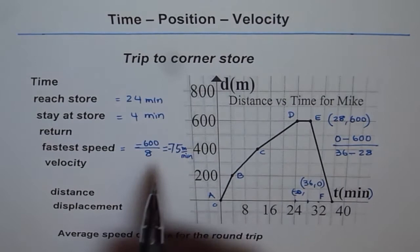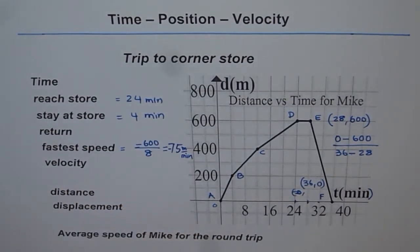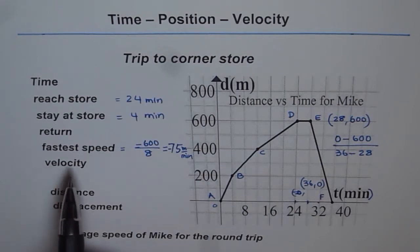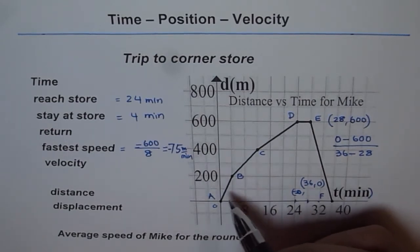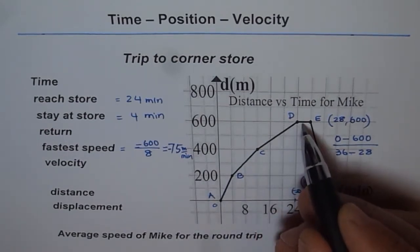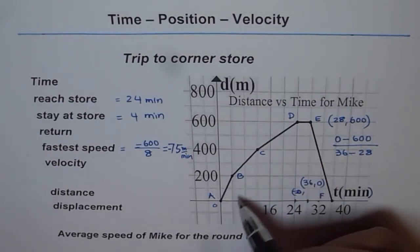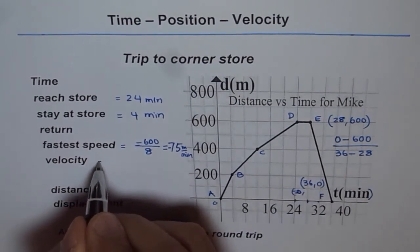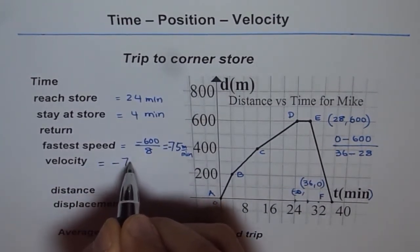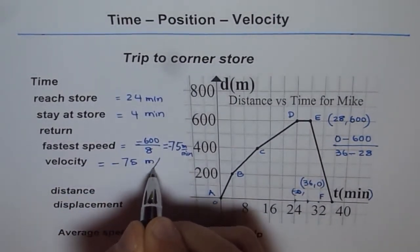We call this velocity. Speed normally does not have a negative or positive thing. Speed is always considered positive. But velocity is a term given which is a vector quantity and it has a direction. When we say going away from home is positive direction, coming towards the home is negative direction. We term this as velocity of minus 75 meters per minute.